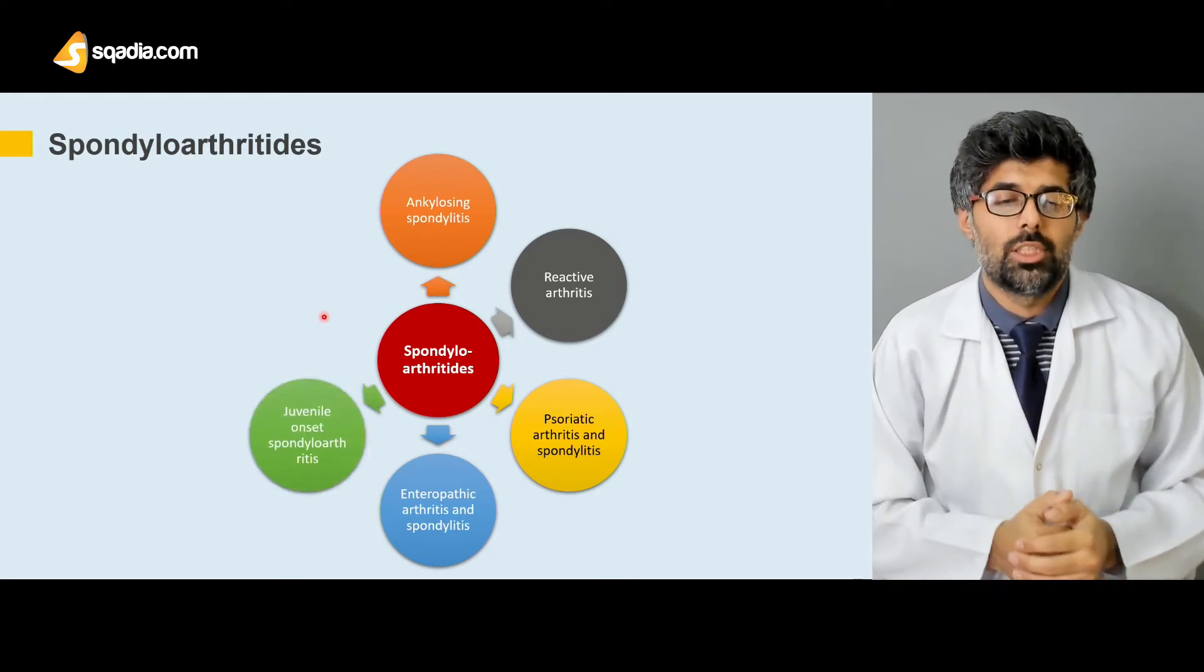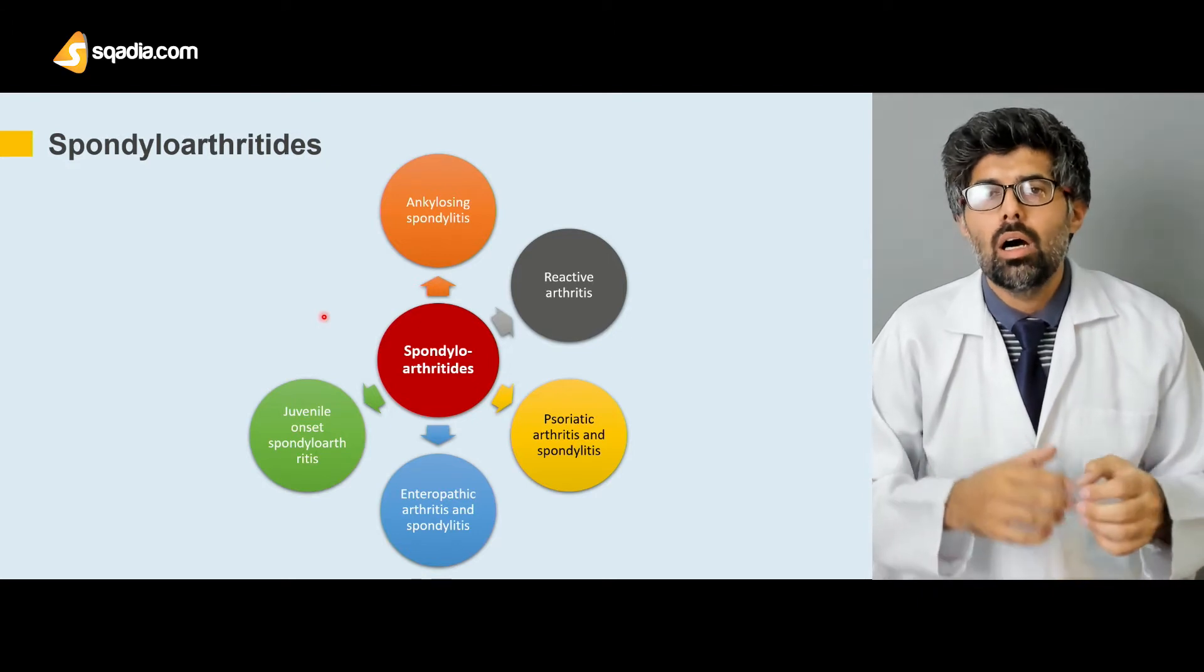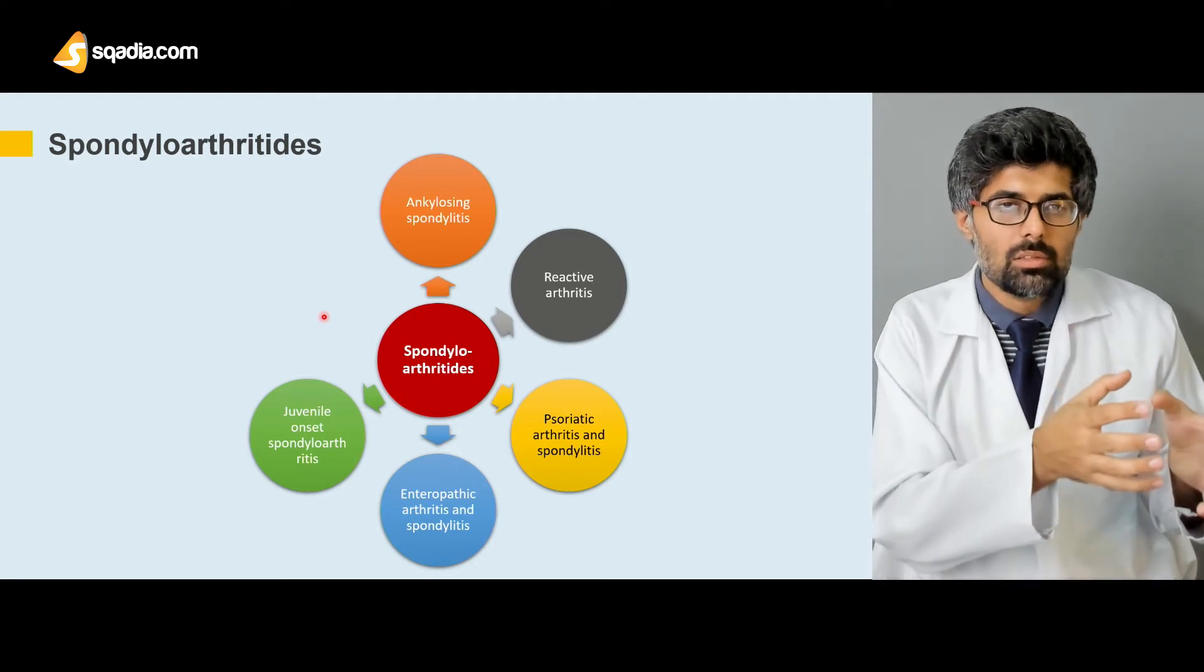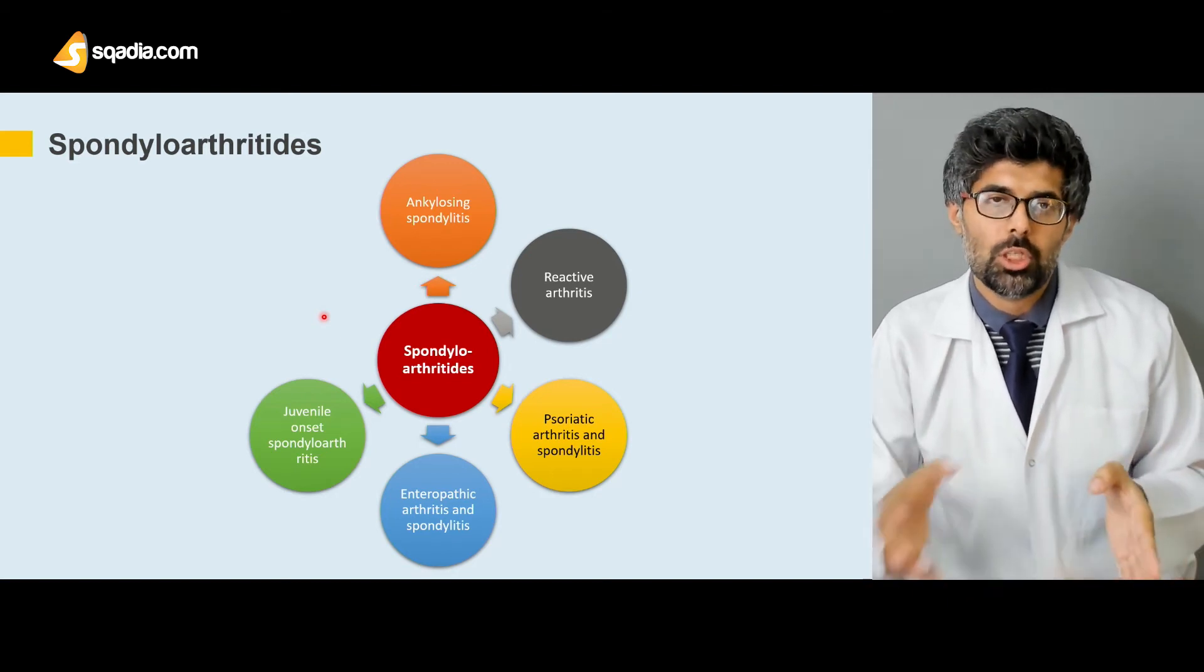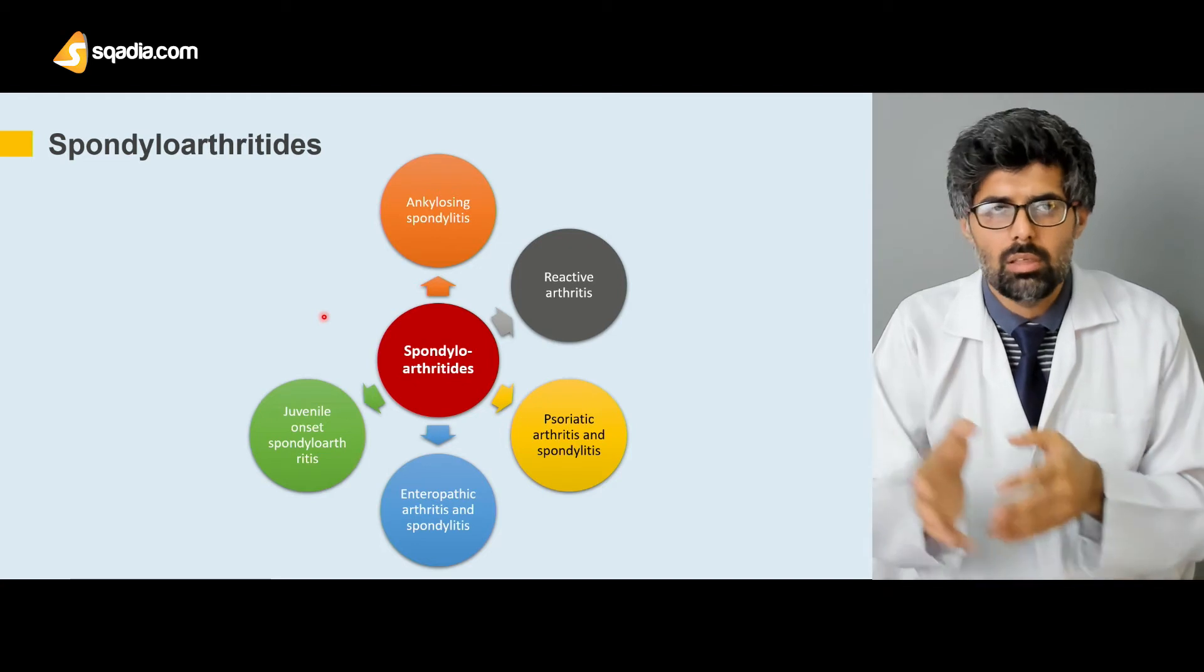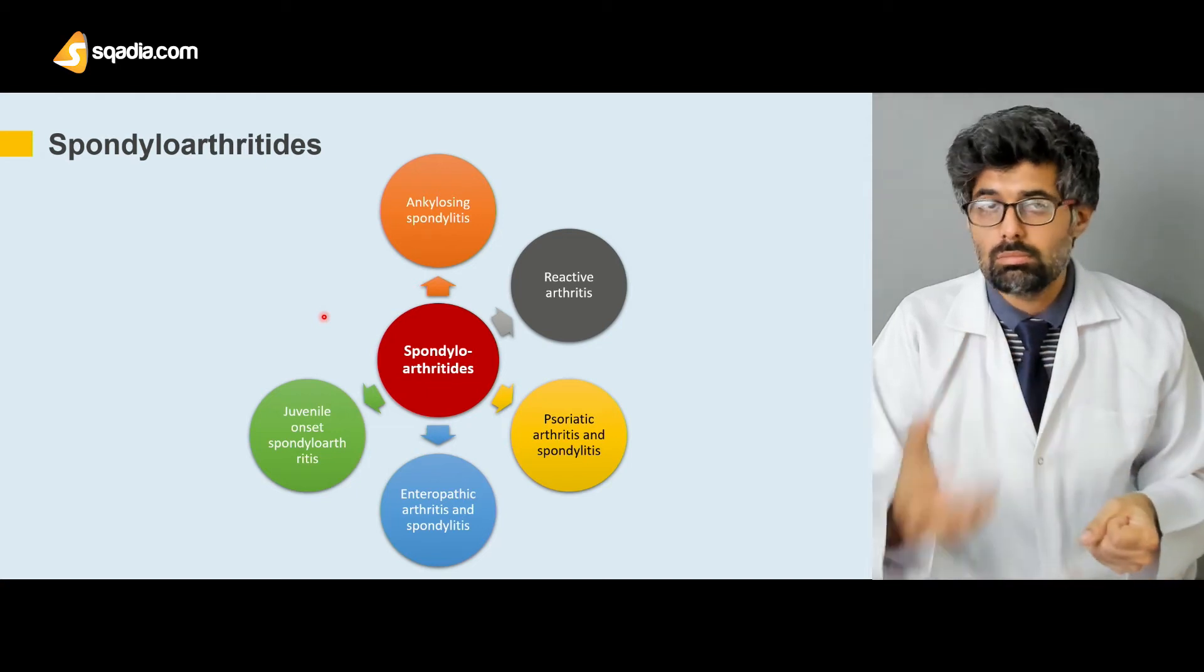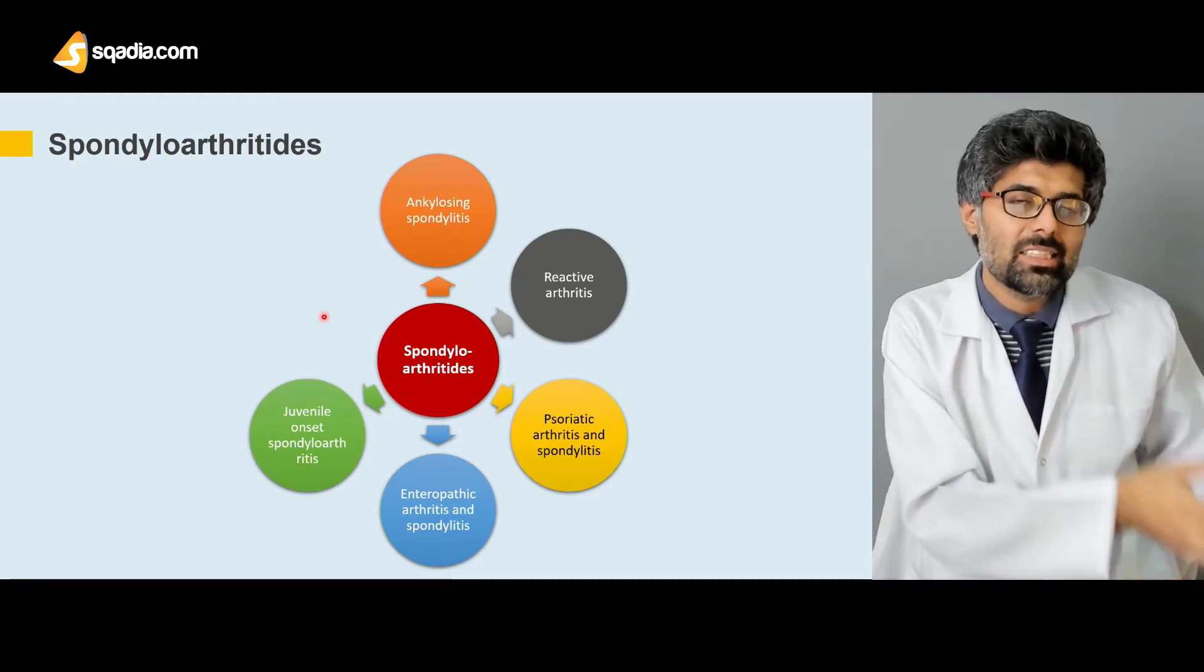Next we have the juvenile onset spondyloarthritis. Juvenile onset spondyloarthritis used to not be among the group of the spondyloarthritides, but in recent surveys it has been added to the textbooks because in juvenile onset during the age of childhood, usually the symptomatology is not complete. Sometimes it overlaps and sometimes it doesn't even stay at one place. It keeps repeating in an asymmetrical fashion. Because of these kinds of peculiarities with juvenile onset, when spondyloarthritis occurs at a young age, juvenile spondyloarthritis has been created as a separate entity.